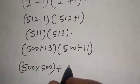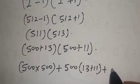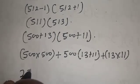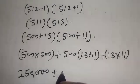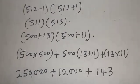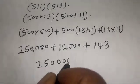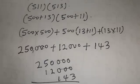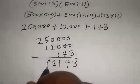Now we compute 511 times 513. Breaking it down: 513 can be split as 500 plus 13, and 511 as 500 plus 11. So 500 times 500 is 250,000. Opening the bracket gives 12,000 plus 143. Adding everything together: 250,000 plus 12,000 plus 143 equals 262,143.